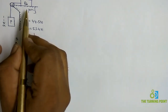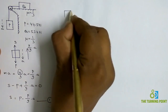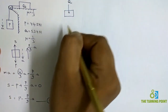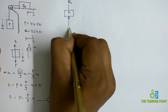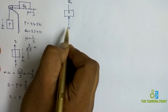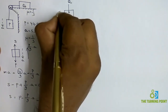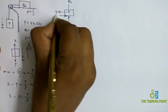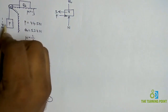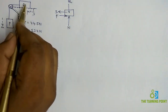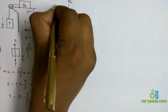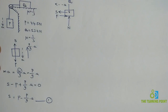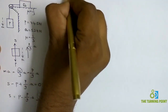Now consider the free body diagram of the second block Q. Remove all contact surfaces and draw it separately. Represent the weight Q acting vertically downwards, and the normal reaction perpendicular to the surface. This block is not able to move in the downward direction, so represent the normal reaction upward. Along the string there will be tensile force S. The block moves horizontally, so in the opposite direction there will be a frictional force F. Since it accelerates to the left, in the opposite direction represent the inertia force (Q/g)·a.